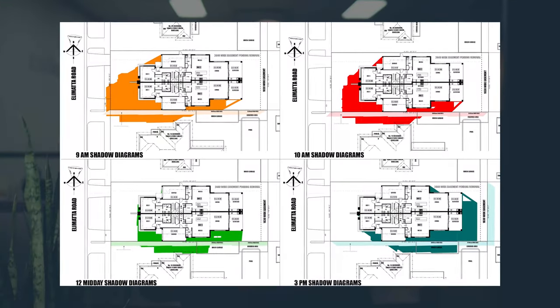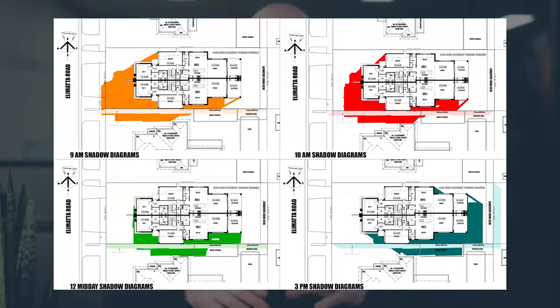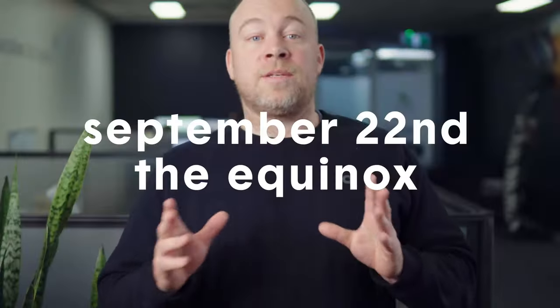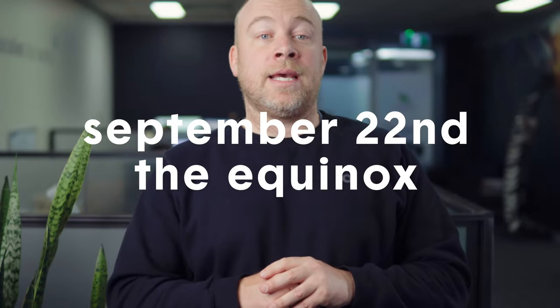Another thing worth mentioning is how shadowing is calculated and presented in your town planning application. When submitting your application, several standard requirements need to be met. You will need to provide a plan with shadow diagrams showing where shadows will fall at specific times of the day. The shadow diagrams must be shown on a separate plan for 9am, 12 noon and 3pm on September the 22nd, which is the equinox. They must include the shadow cast and you need to show the difference between the existing shadows and the proposed shadows.